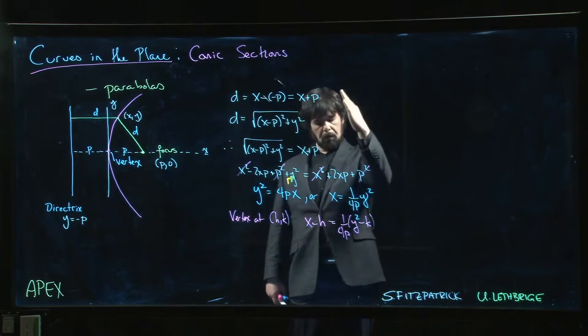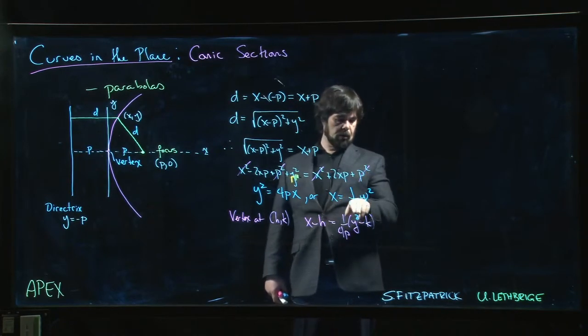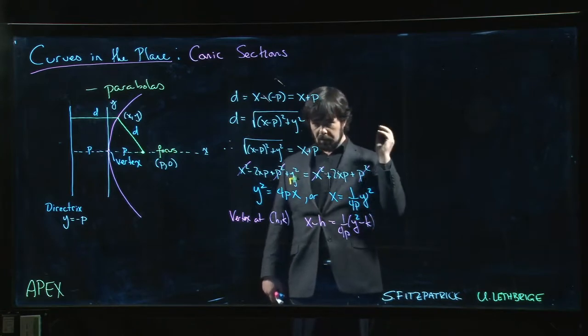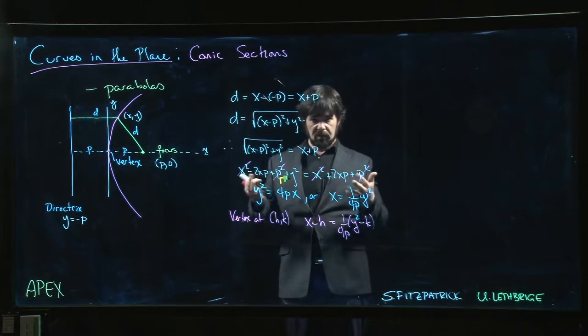And if it was opening upwards, you would have y equal to 1 over 4p times x squared. Opening downwards, again, put the minus sign in. So we have all these variations.